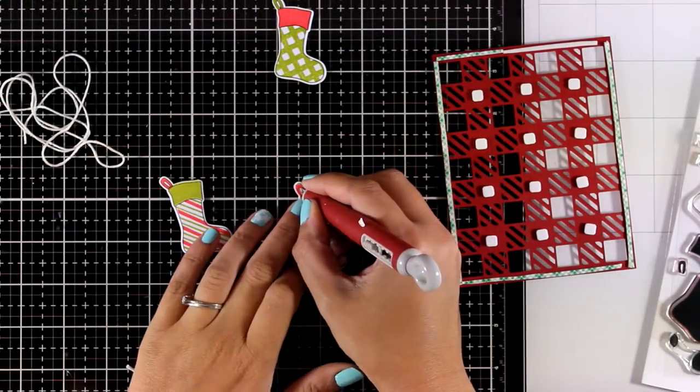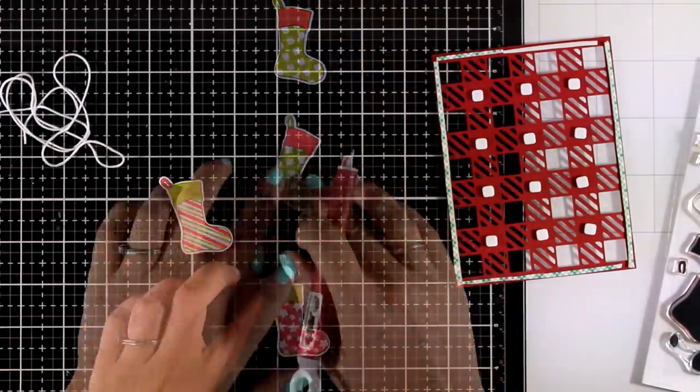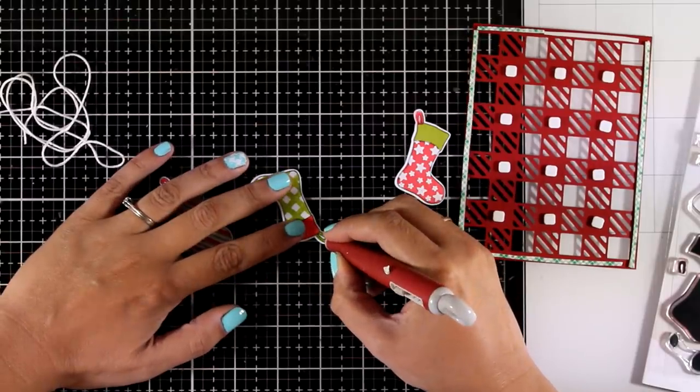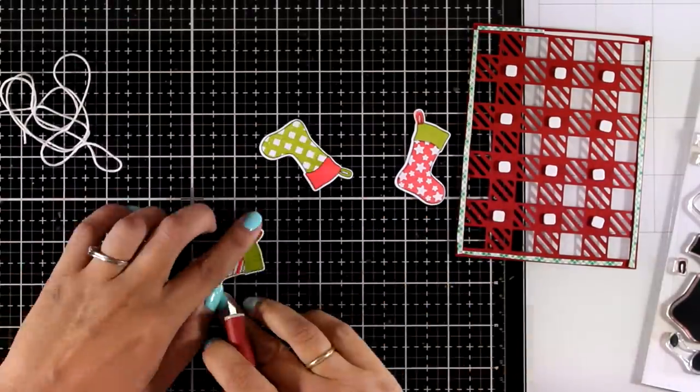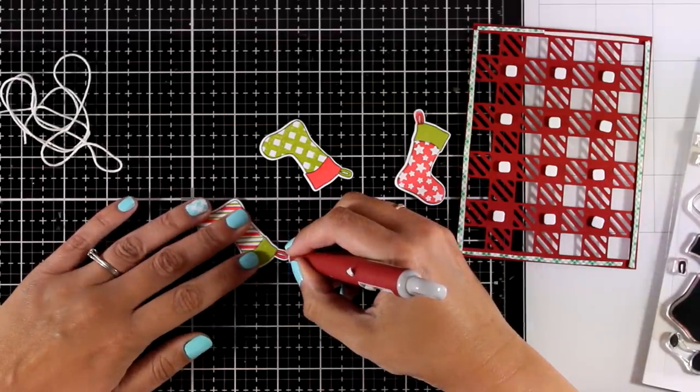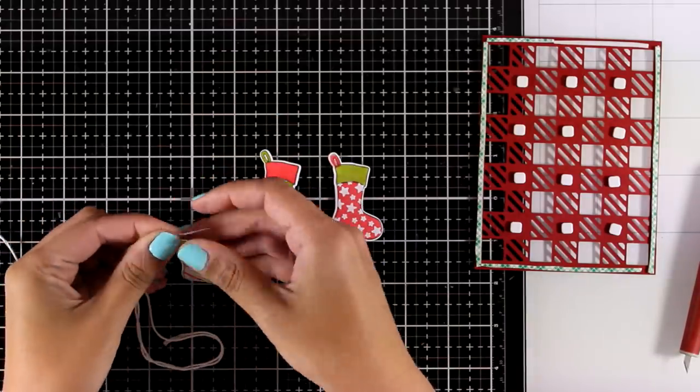Now I did add some foam squares as you can see at the back of my cover die cutout, so this is going to help the design to pop a little bit more. Now I'm using my craft knife and I'm cutting out slits at the inside of each and every loop.